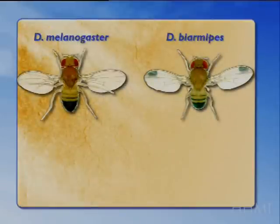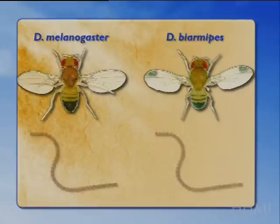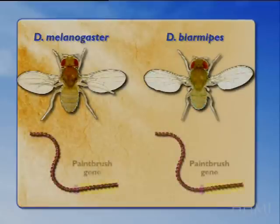Let's compare two flies: one without spots, which is the humdrum Drosophila melanogaster, and one with spots on the male, Drosophila biarmipes.